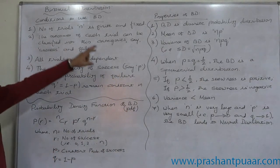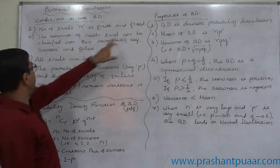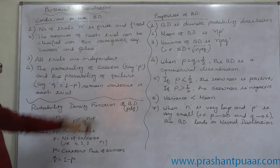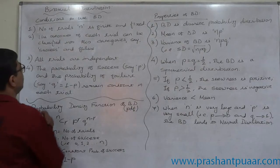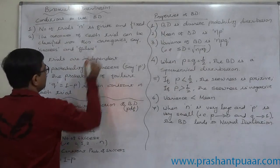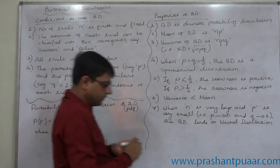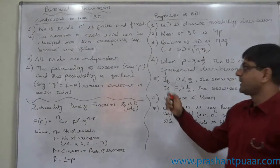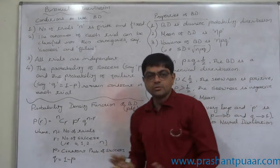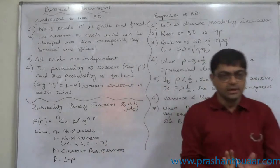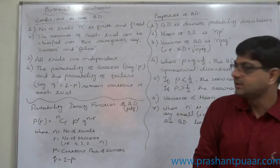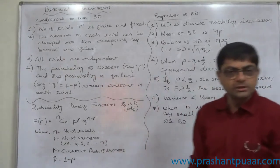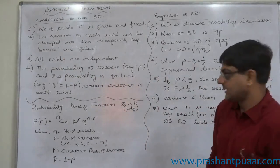The second condition is that the outcomes of each trial can be classified into two categories: success and failure. That means whatever the outcomes of the experiment or any trial are, they are classified into two categories only. Success means getting the desired result and failure means not getting the desired result.